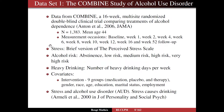We will examine three dependent variables. The first is a stress variable — a brief version of the Perceived Stress Scale — which is a continuous variable. The major outcome is alcohol risk, a categorical variable measured as abstinence, low risk, medium risk, high risk, or very high risk. We will also examine the heavy drinking variable: number of heavy drinking days per week. We also have several covariates, primarily the intervention groups — medication, therapy, and placebo — as well as many background variables.